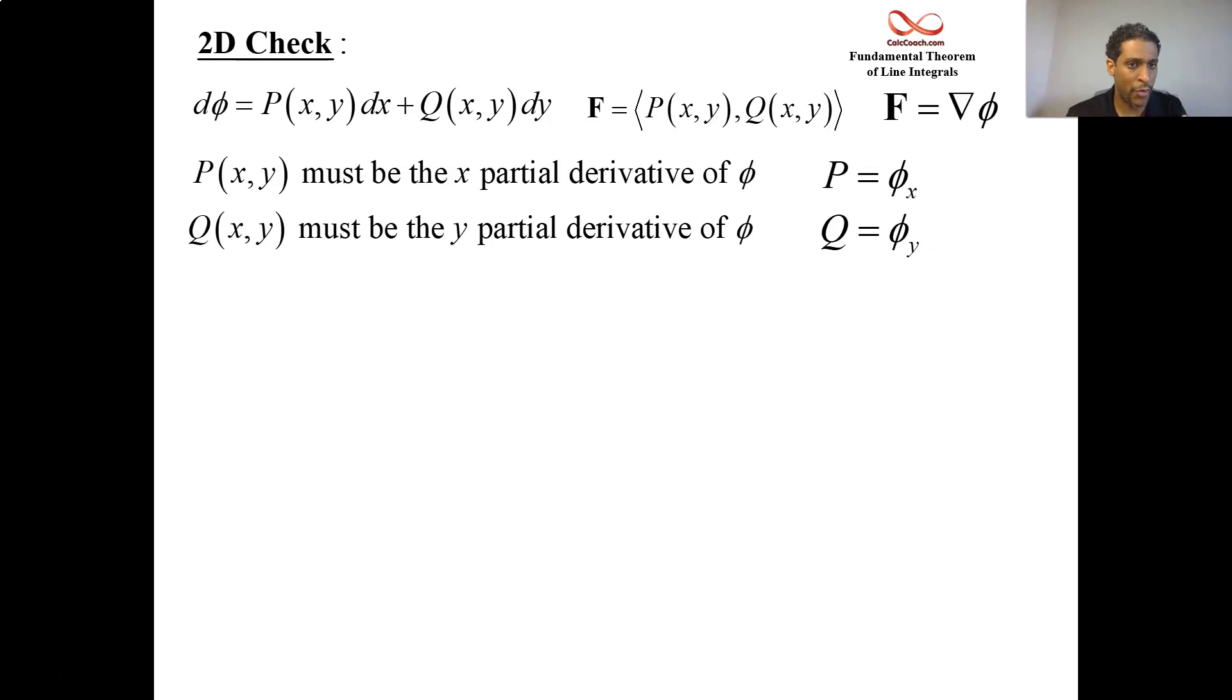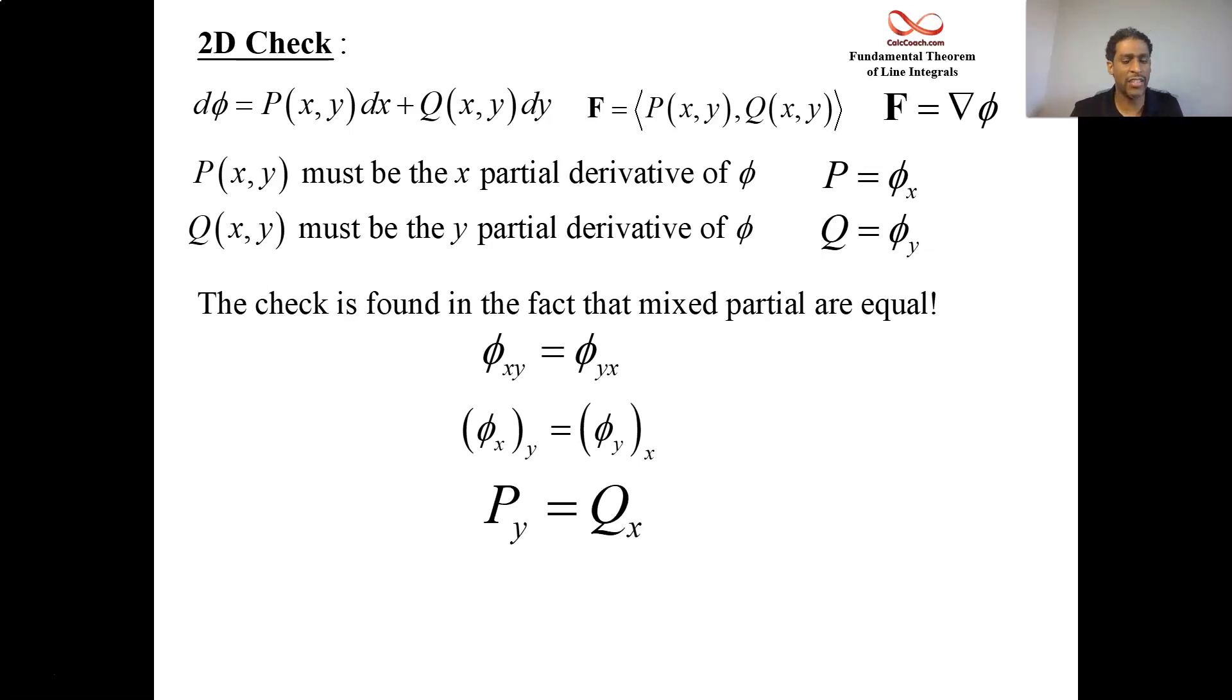So I'm just trying to show you where the check comes from. Here is the check. The check is found in the fact that the mixed partials should be equal to each other. So if you already have phi x and you take a y partial, phi xy, it should be equal to phi y and you take an x partial. So phi x with respect to y is equal to phi y with respect to x. And the check is going to be exactly that, that p_y is equal to q_x. If that's the case, then there is a phi out there and we can then attack how to find out what the phi is.